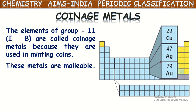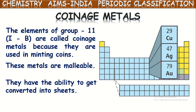Because of these two reasons — high malleability and high ductility — they are used for making coins and jewelry. That is why, based upon this usage, copper, silver and gold present in the 1B group are named as coinage metals. Even a small quantity of these metals can be drawn into very large, very thin sheets.